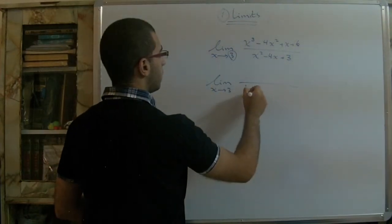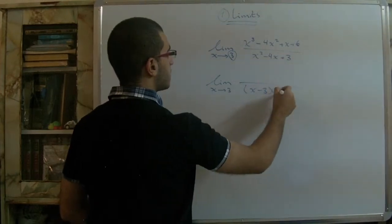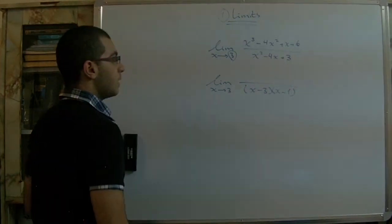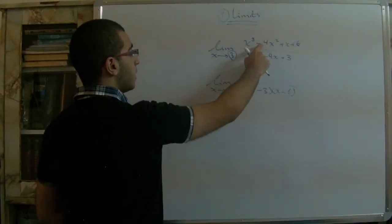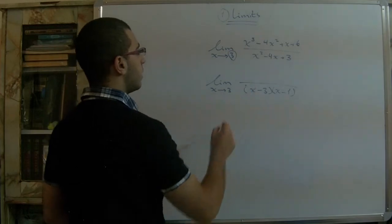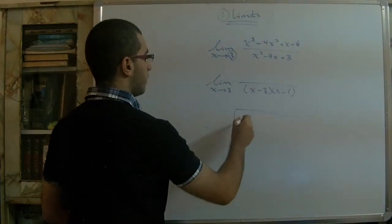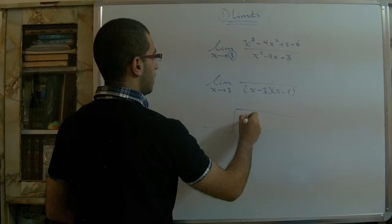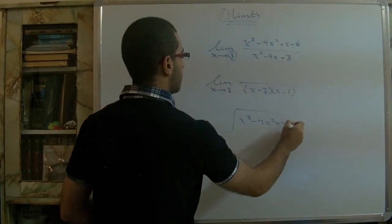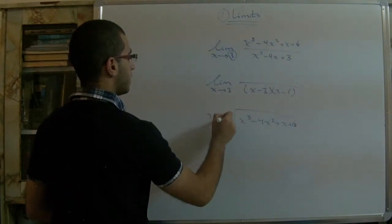The denominator is factorable and we write it as (x − 3)(x − 1). However, the numerator is not directly factorable, so we use long division. We divide x³ − 4x² + x + 6 by (x − 3).